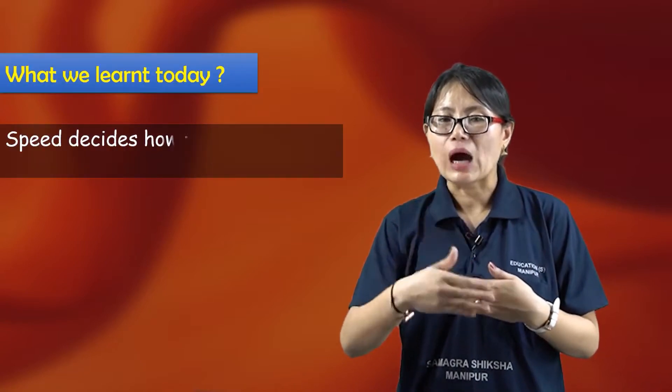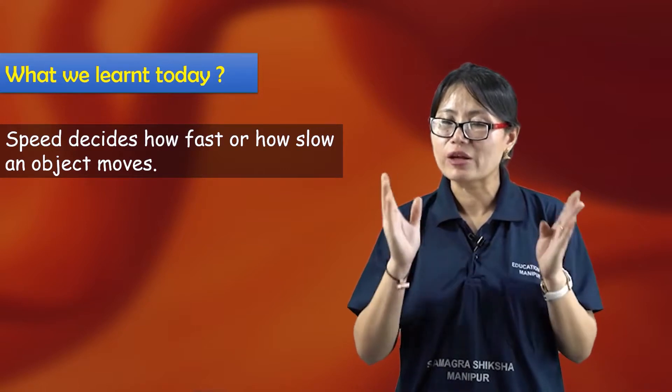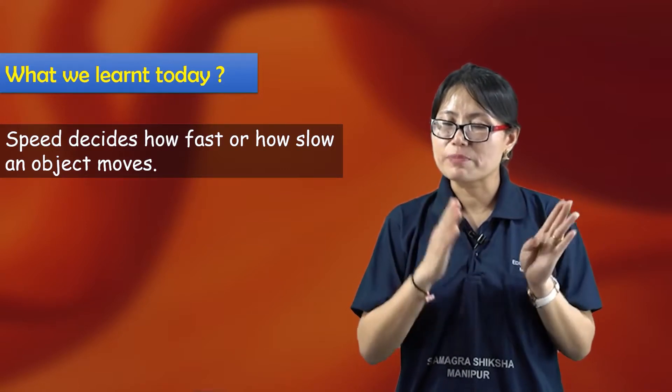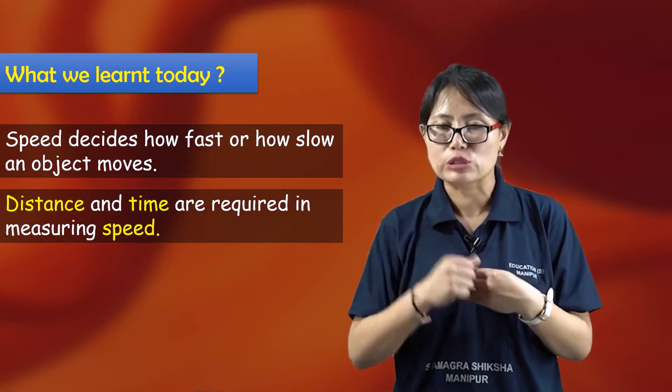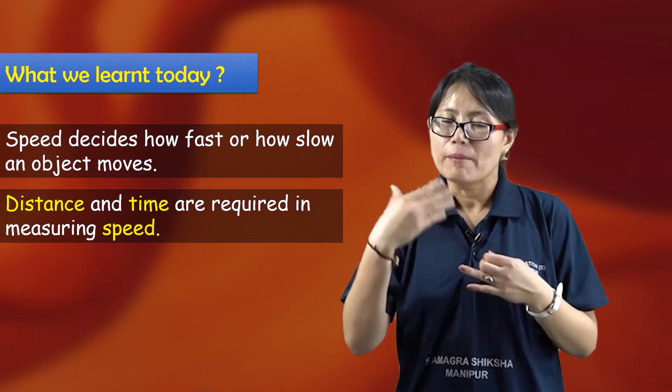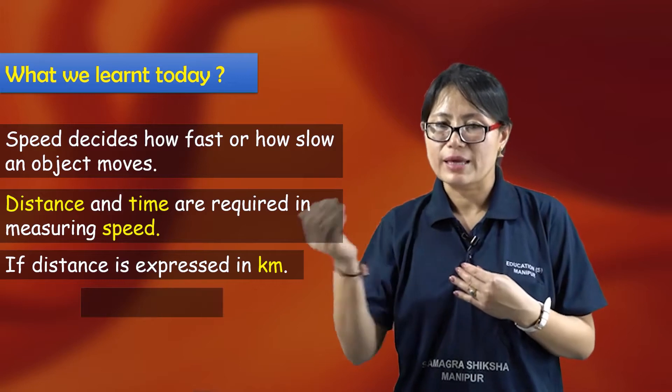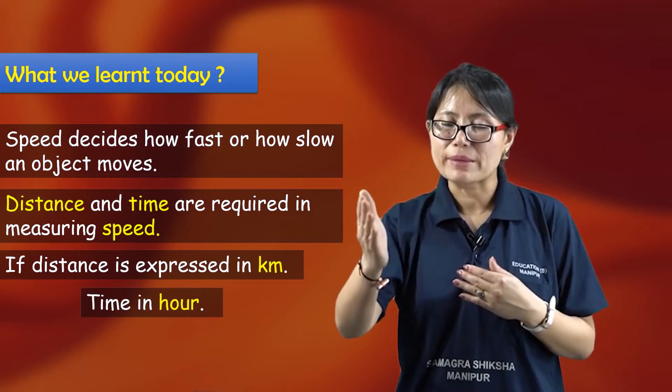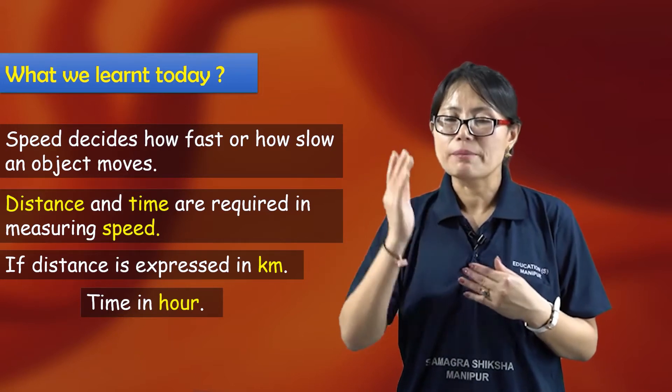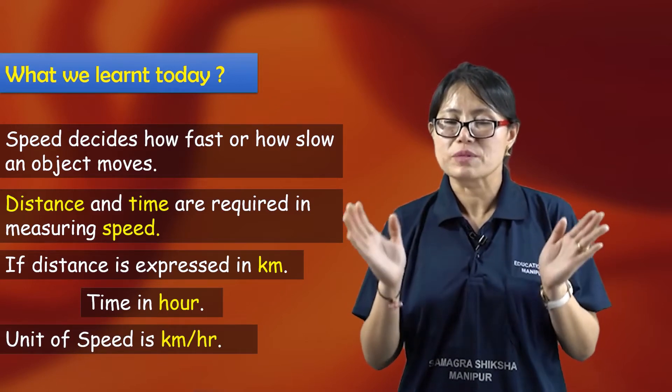In this chapter, we covered the determination of speed, how speedy, how fast or how slow the object moves. The very important quantity is speed. Speed determines how fast or how slow by measuring distance and time. The remaining part will continue in the next session.